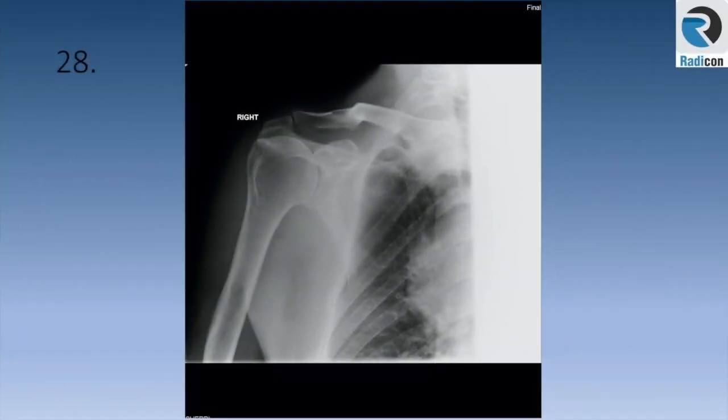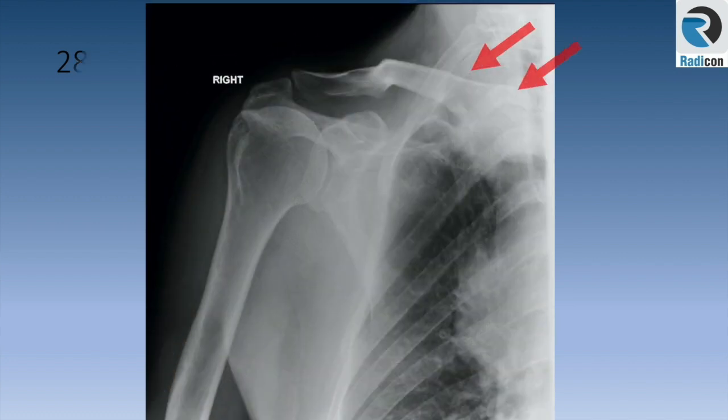Case 28. Right shoulder view. While you are looking for the obvious and occult abnormalities, please pay some attention to extra findings. A classic rapid reporting film is where an unexpected finding is present — such as this shoulder X-ray showing a right lung apical tumour.